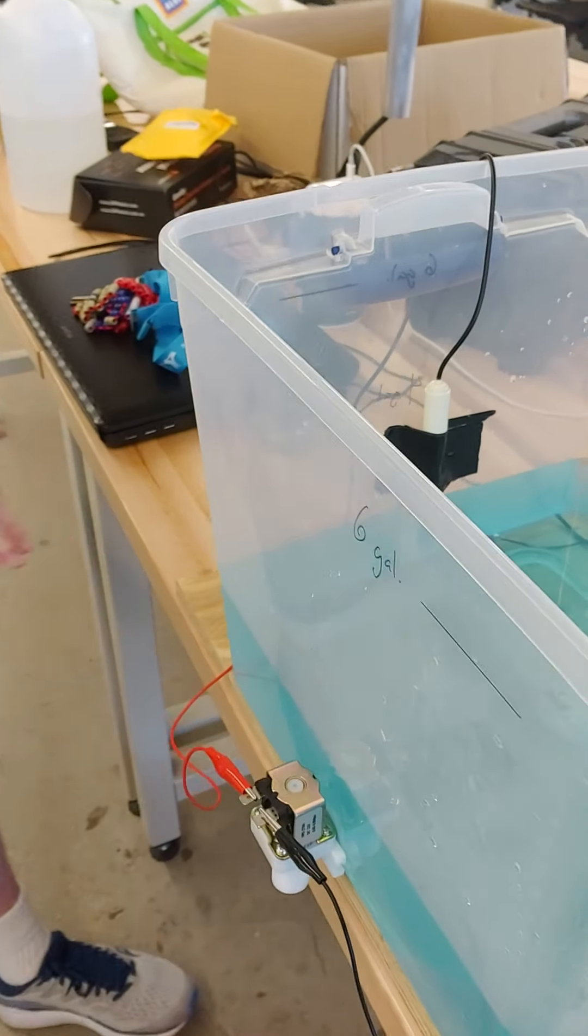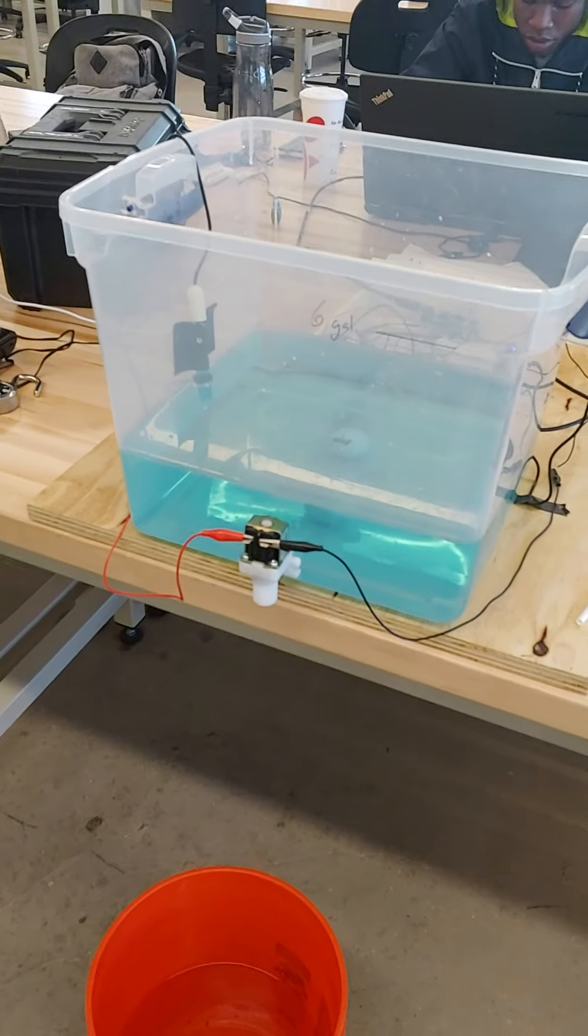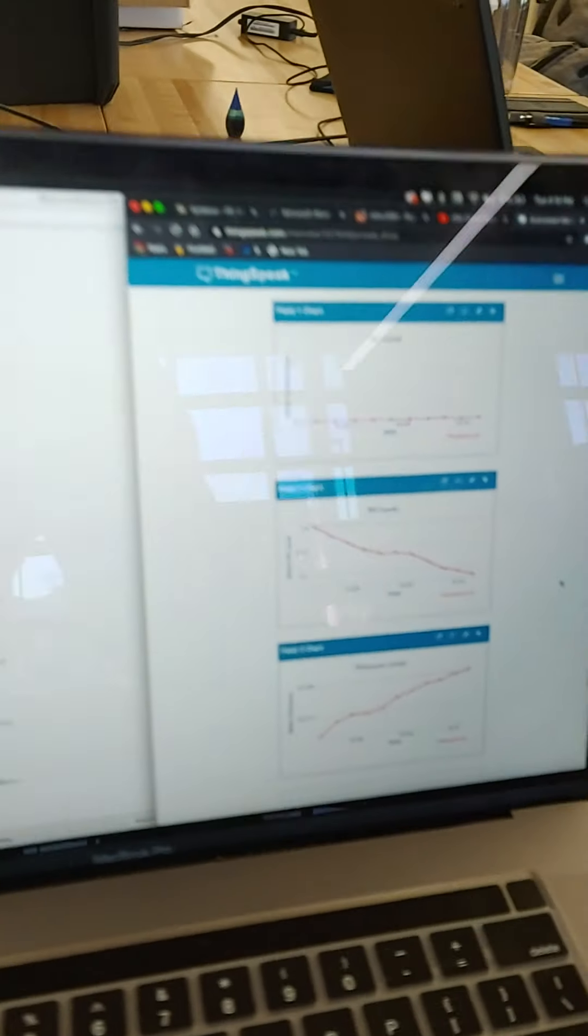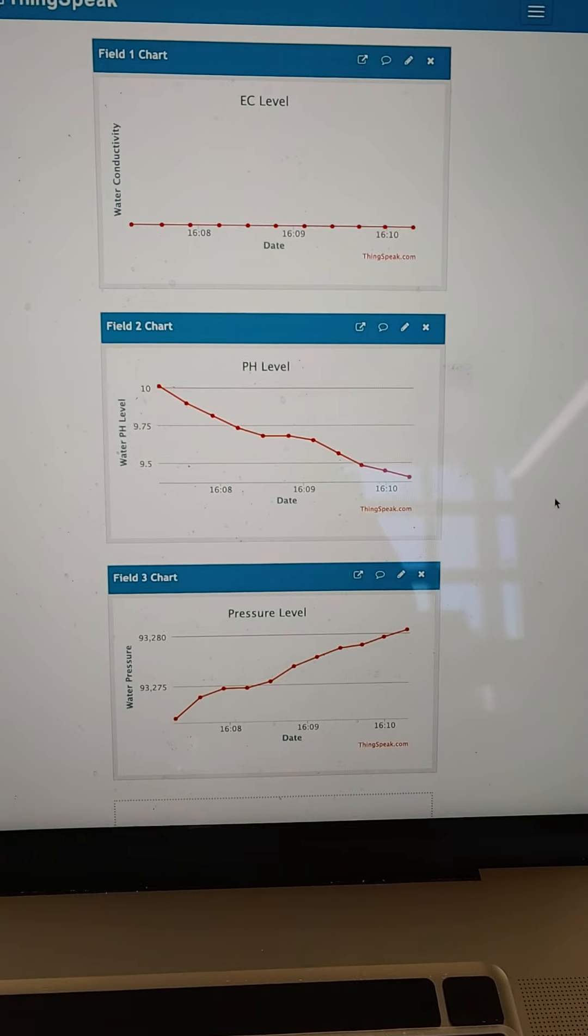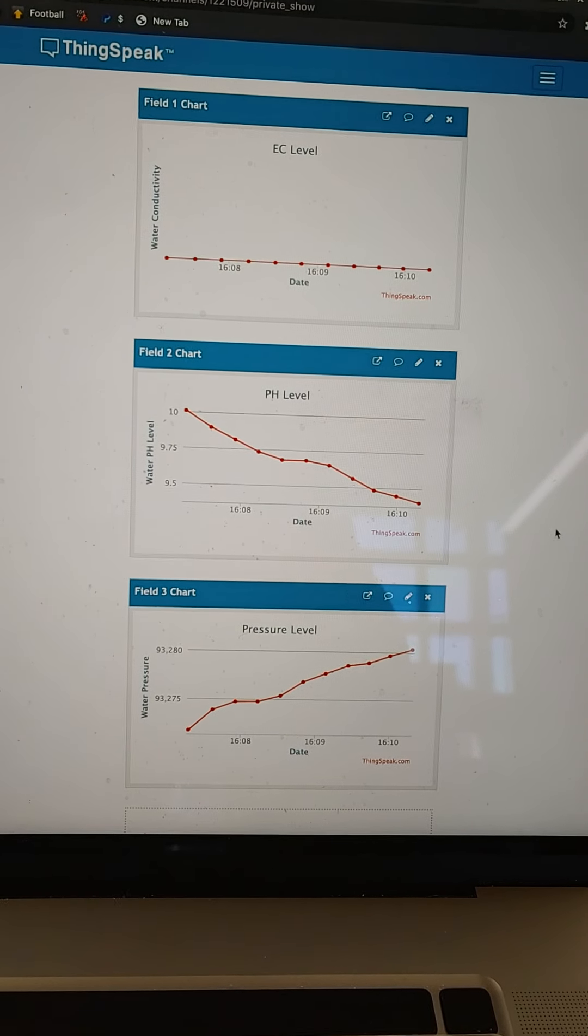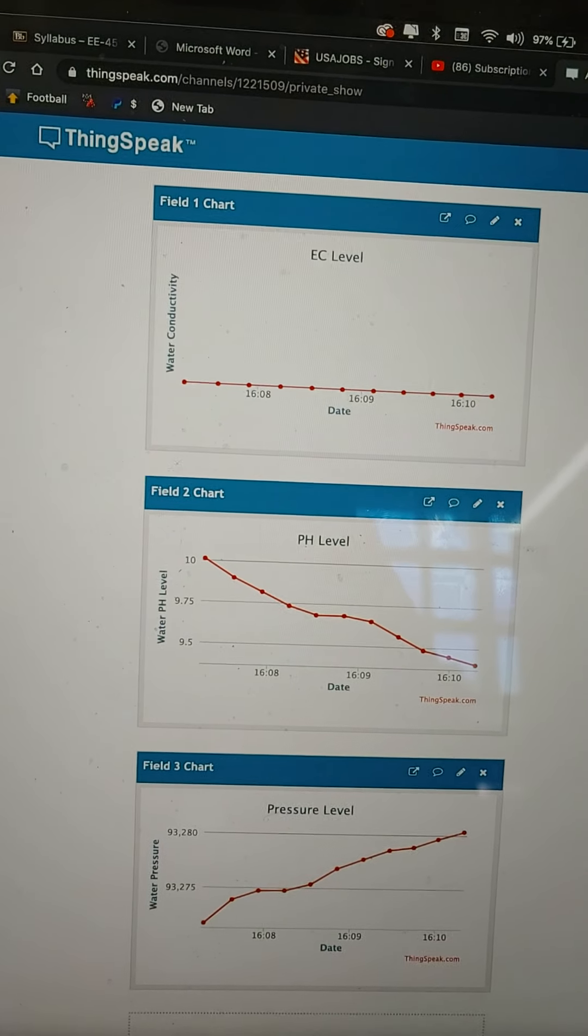So right now we have our water sitting here with our food coloring and we've had it running on Thanksgiving. As you can see we have the pH level, pressure level and the EC levels going in here. Nothing on the EC as we haven't dumped anything yet.